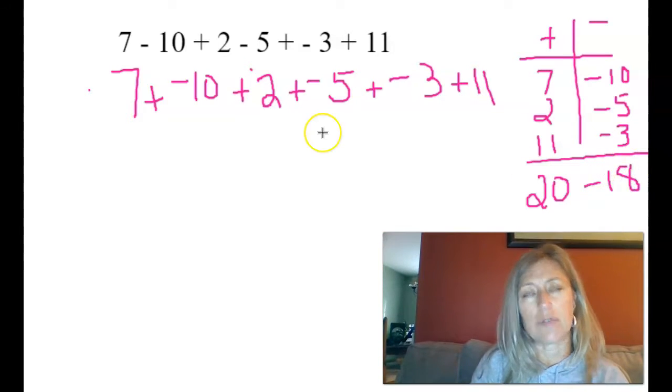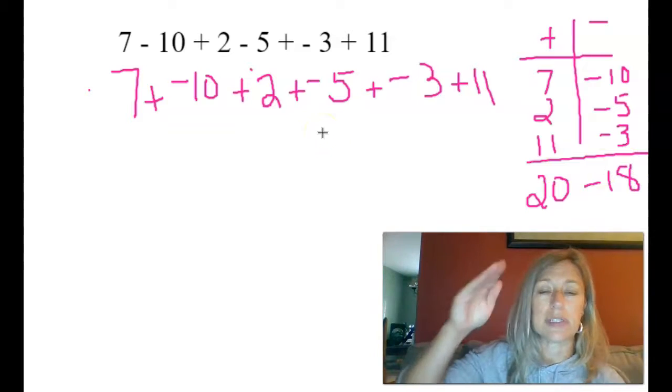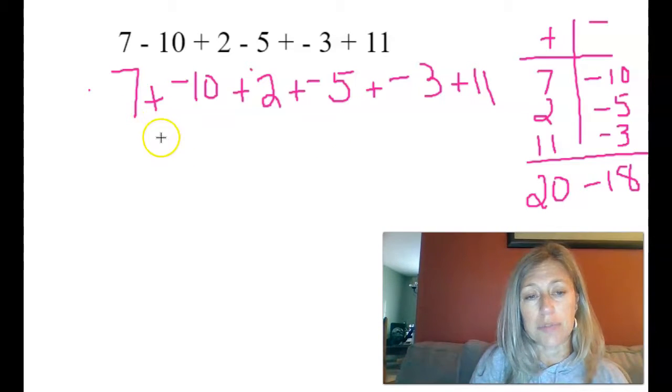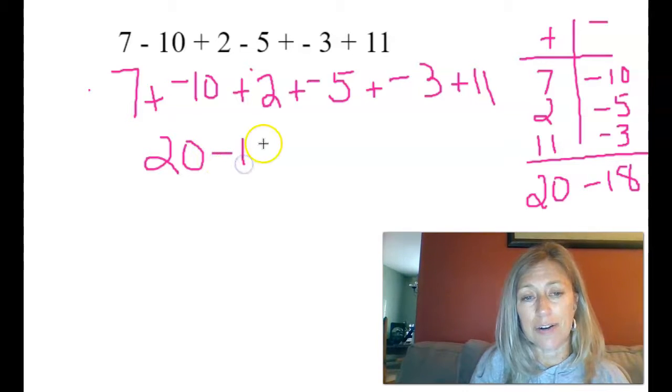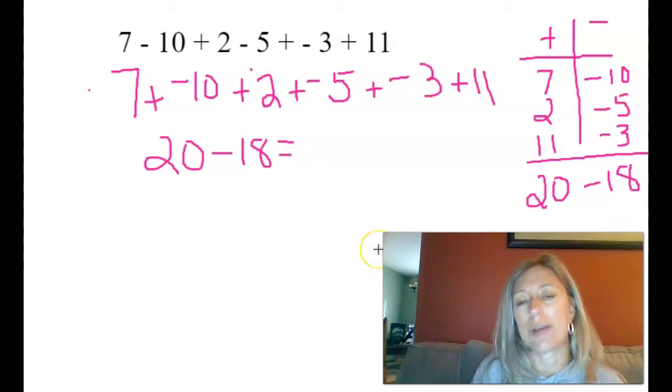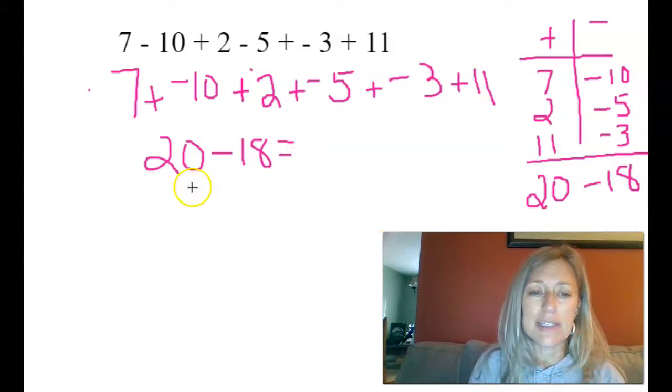See how much easier it is instead of worrying about this is positive, this is negative? Just combine like terms. So I'm going to rewrite this expression here, and the last step is super easy. You already know 20 minus 18 is 2.